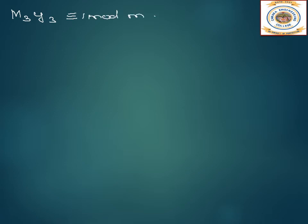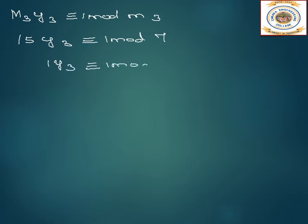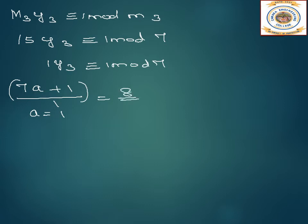Now we calculate y3. M3·y3 is congruent to 1 mod m3 — that is, 15·y3 ≡ 1 mod 7. Since 15 is greater than 7, when we divide 14 goes in once with remainder 1. So 1·y3 ≡ 1 mod 7. Using the formula (7a + 1) / 1, when a equals 1 we get 8. Therefore y3 equals 8.